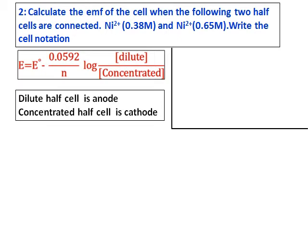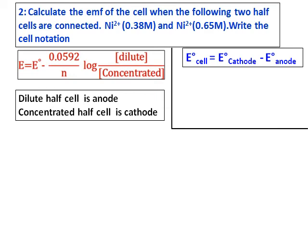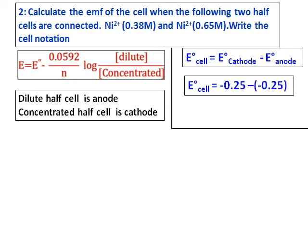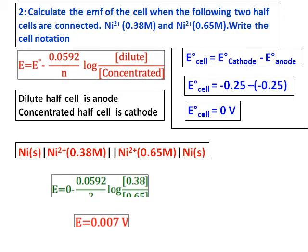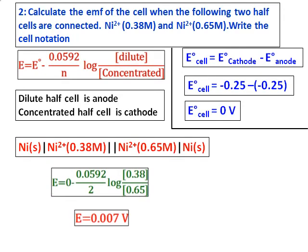We calculate E0 cell, which equals zero because the electrodes are the same. The cell notation will have 0.38 molar on the anode side and 0.65 molar on the cathode side. Substitute all the values and calculate the value of E.